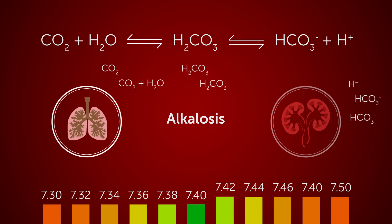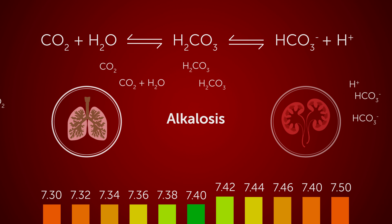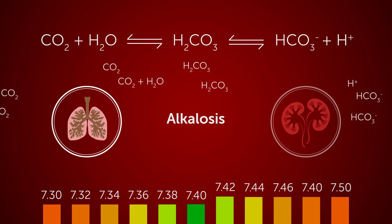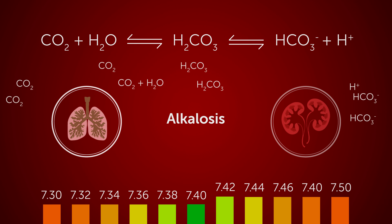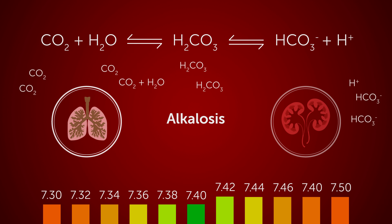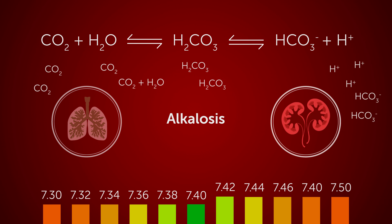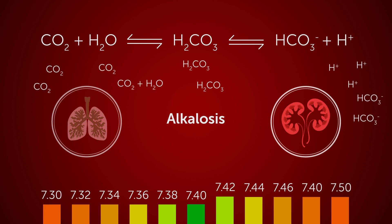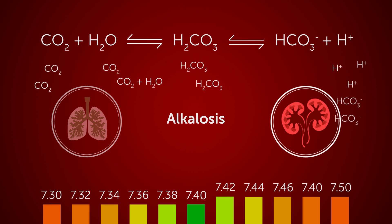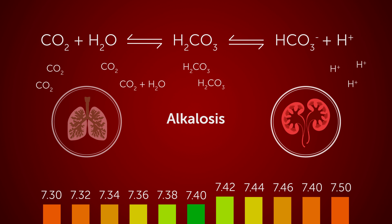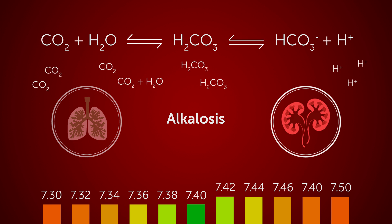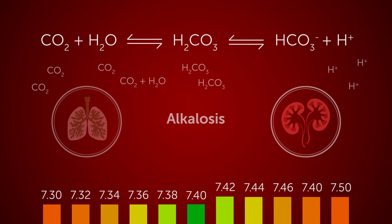To compensate for alkalosis, lungs can perform hypoventilation to retain CO2 in the blood and therefore increase H+ in the blood, or the kidneys can produce less HCO3- to prevent its reaction with H+.